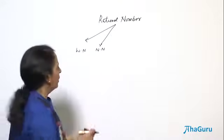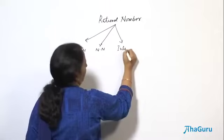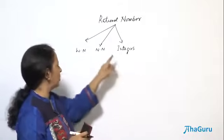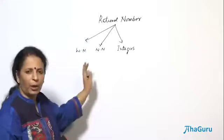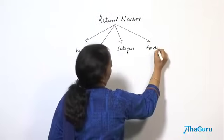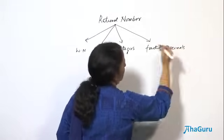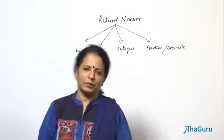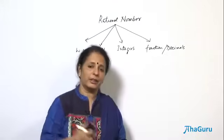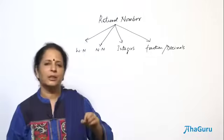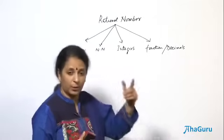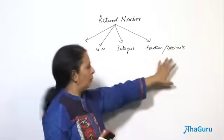Whole number has one extra 0, that's all. Then you have integers — negative numbers like minus 1, minus 2, minus 3, then 0, then all the positive numbers which again become the natural numbers. Then you have a different family of fractions. Both fractions and decimals are actually the same thing — sometimes we write them as decimal, sometimes as fraction. Decimals are special fractions with denominators being powers of 10: 10, 100, 1000, and so on.